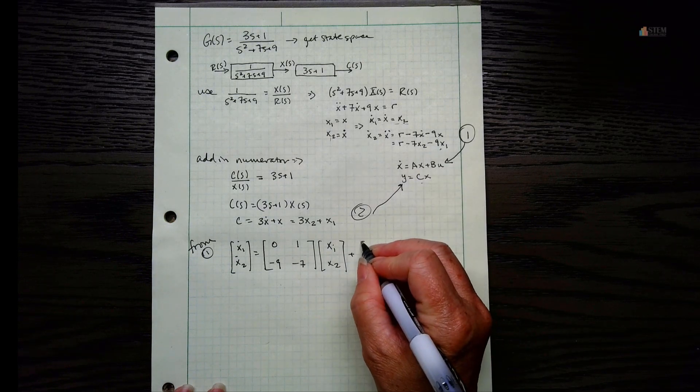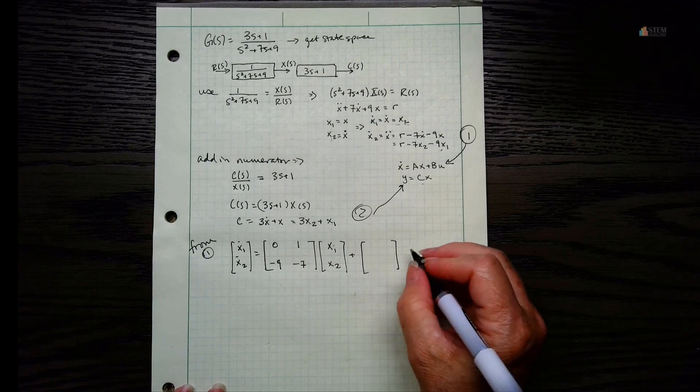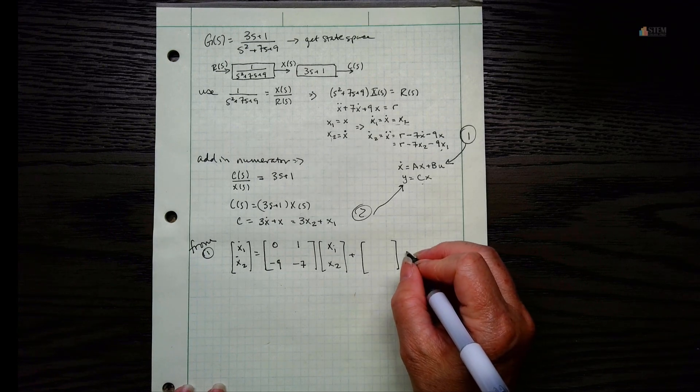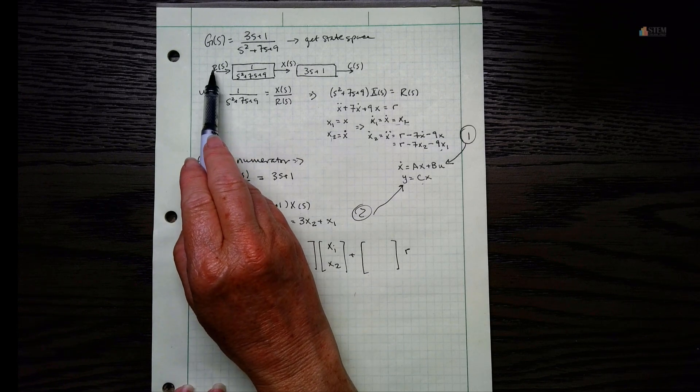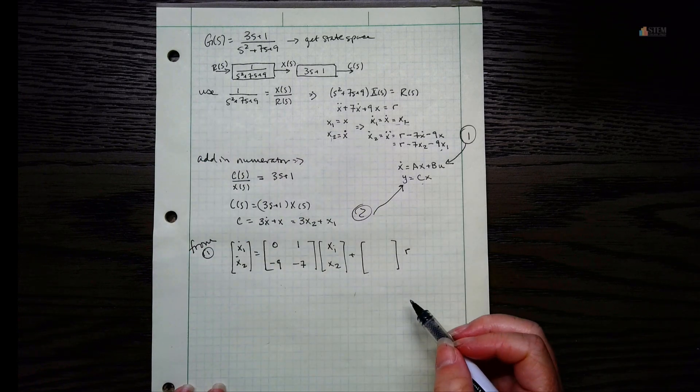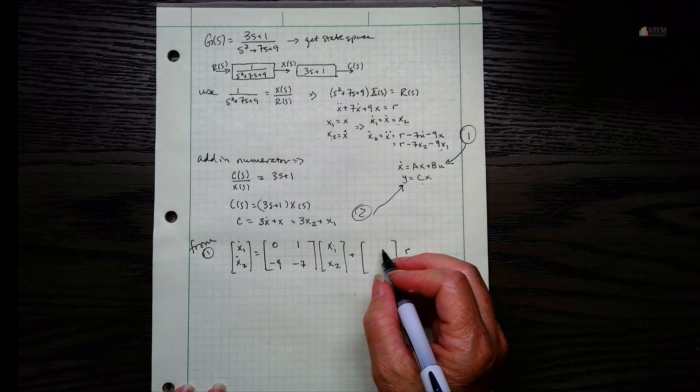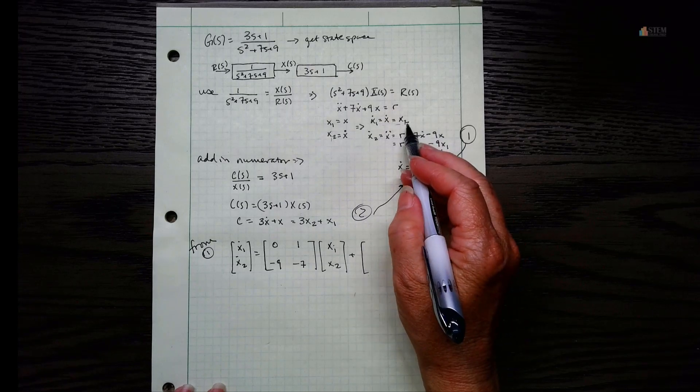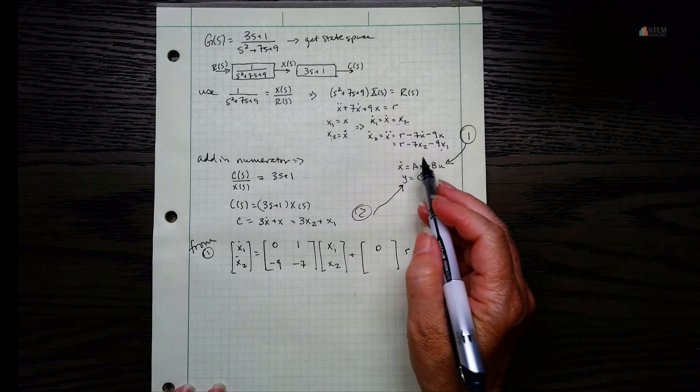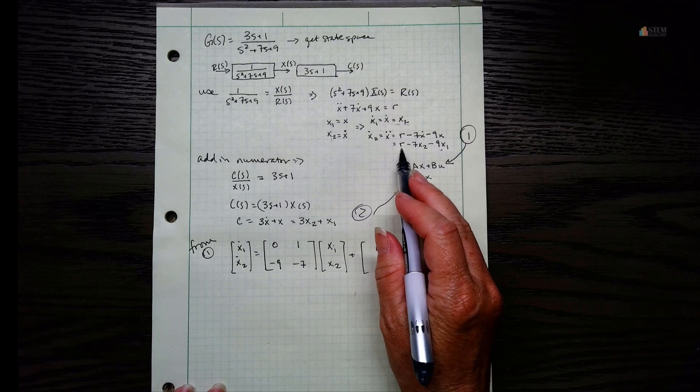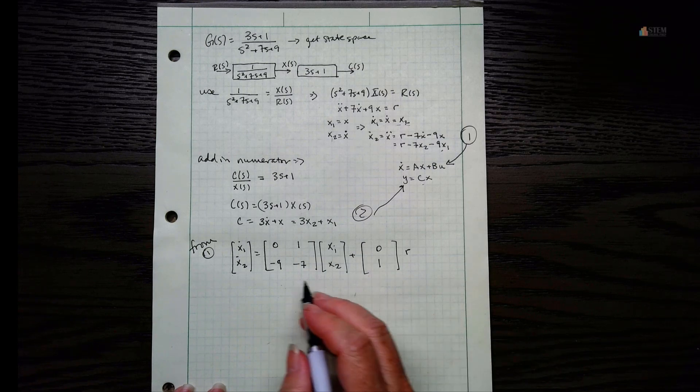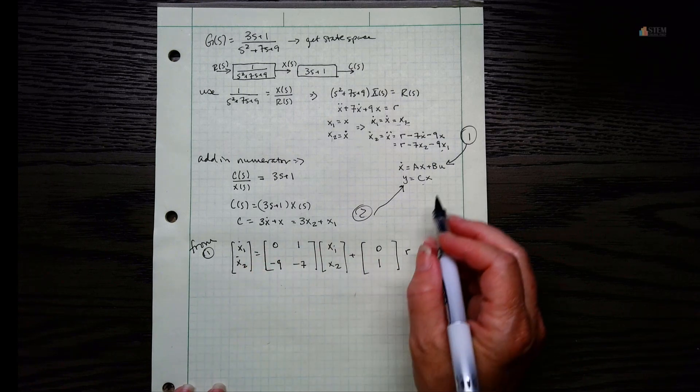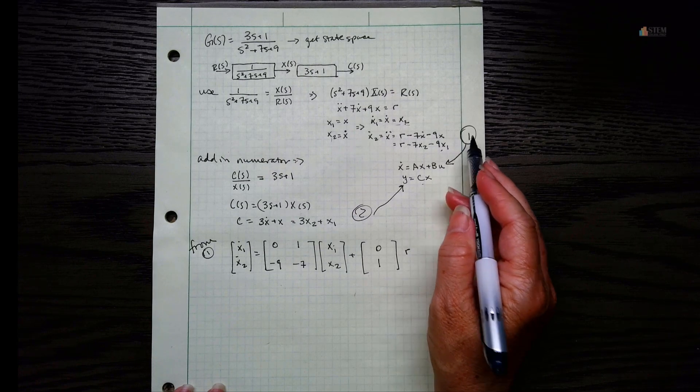Now we've got to go to our B matrix, and our input is R - we know that because this was the input here, so let's just call it R. So now we want to look at our equations and see if we have an R term. I don't have an R term here, so this goes to 0. The second equation here, I do have an R term, so this is going to be a 1. So this part here came from section 1.